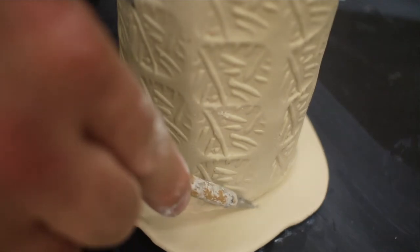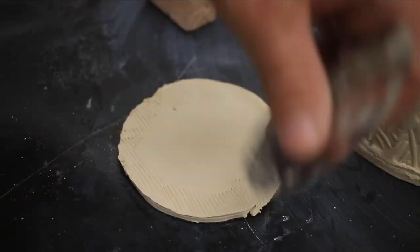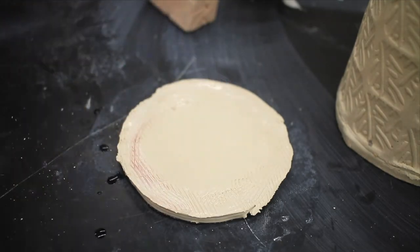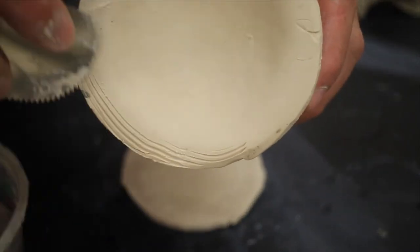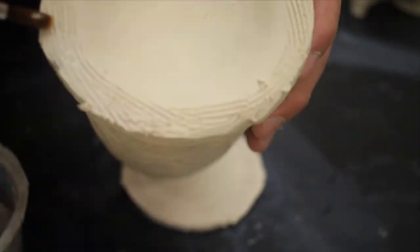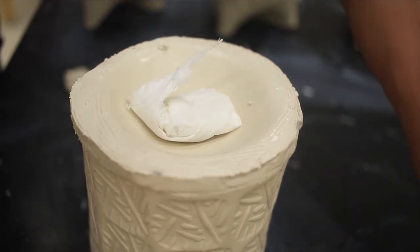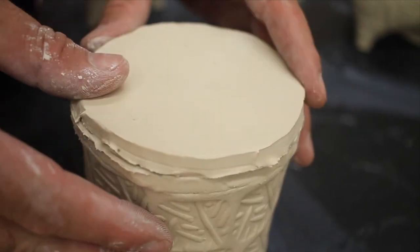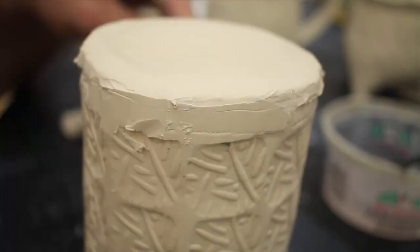Create an additional bottom for your cup by rolling out a second slab, cutting around it, and scoring it with water, just like before. After you've scored the false bottom, add your clay beads inside the cavity and attach the second bottom. Push it down to make sure it's secure and use your rib to scrape off any extra clay.